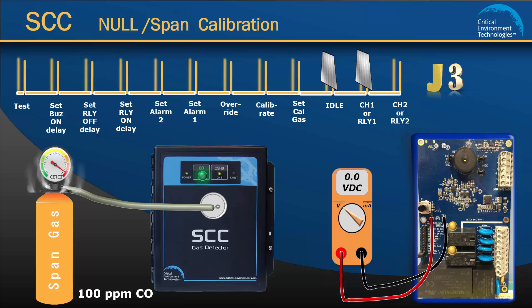Continue the flow of gas and the voltmeter reading will increase. The low alarm LED will come on and relay 1 will be de-energized. As the voltage increases, the high alarm will come on and relay 2 will de-energize. This indicates that the unit has been successfully calibrated and the sensor is responding to gas. Please note, if there are fans connected to the relays, they will be activated at this time and the alarm will sound.